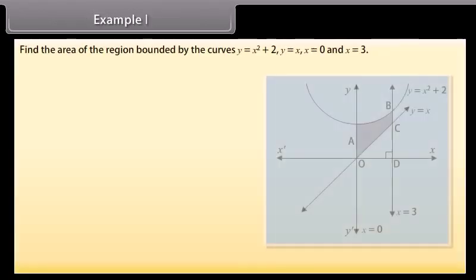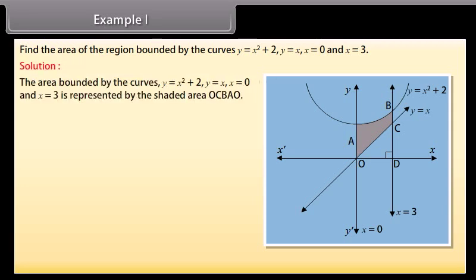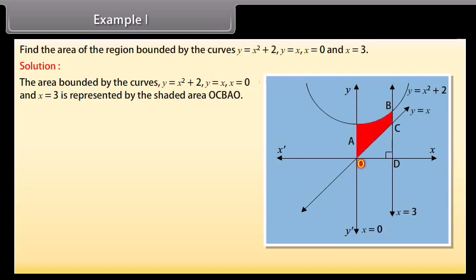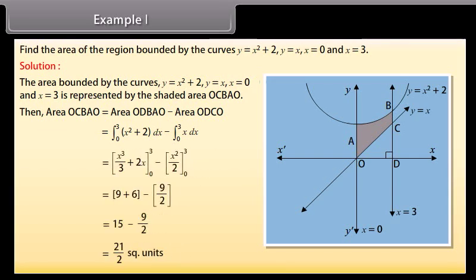Example 1: Find the area of the region bounded by the curves y = x² + 2, y = x, x = 0 and x = 3. The area bounded by these curves is represented by the shaded area OCBAO. Area of OCBAO = area of ODBAO − area of ODCO = ∫ from 0 to 3 of (x² + 2) dx − ∫ from 0 to 3 of x dx. By solving, we get 21/2 square units.